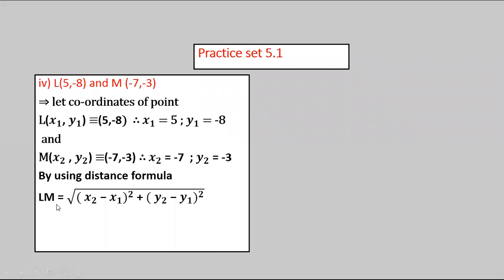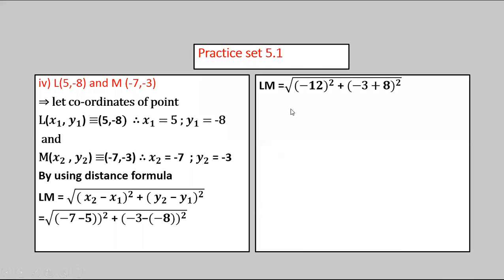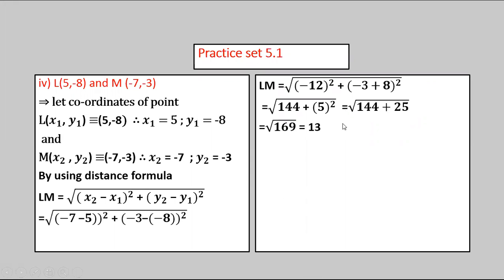LM = √[(−7−5)² + (−3−(−8))²] = √[(−12)² + (5)²] = √[144 + 25] = √169 = 13. Taking square root, we get 13.